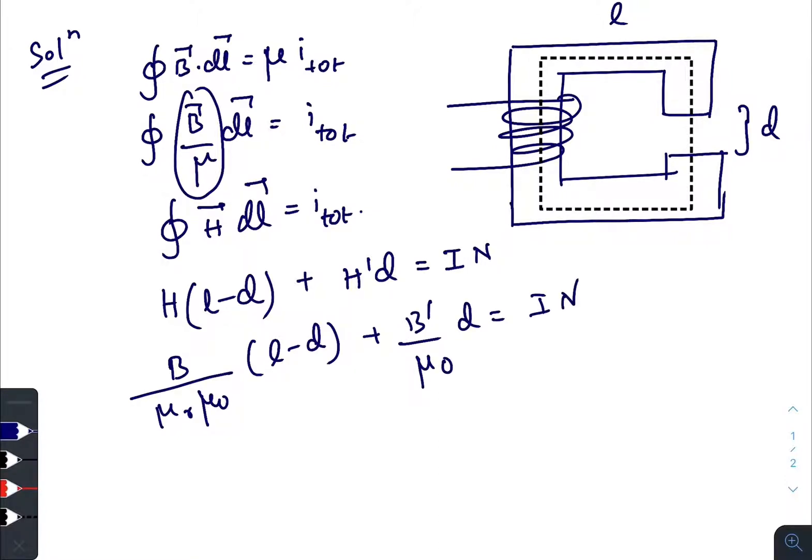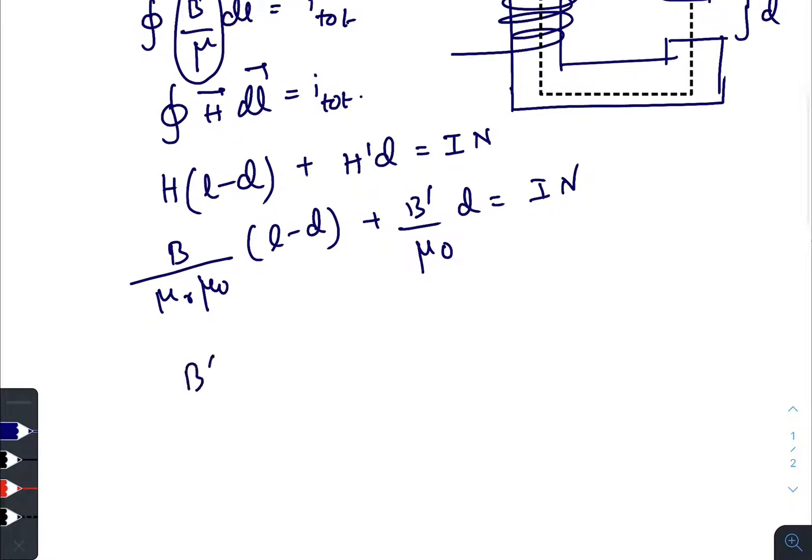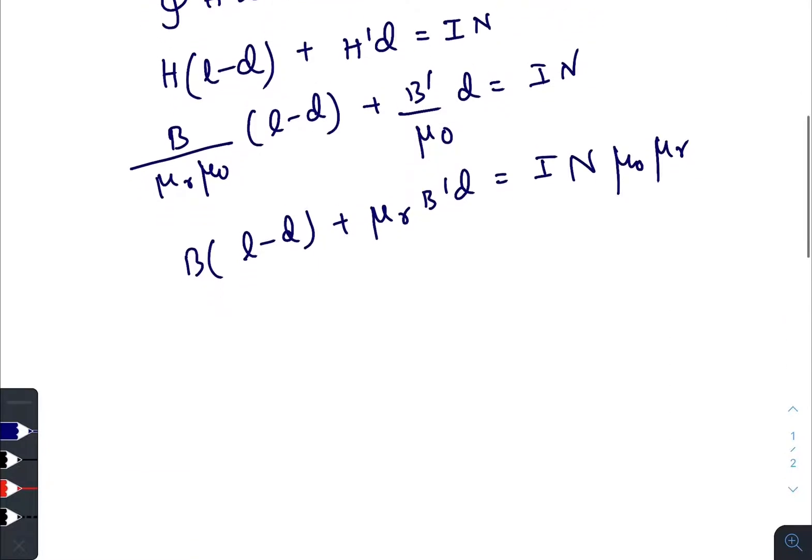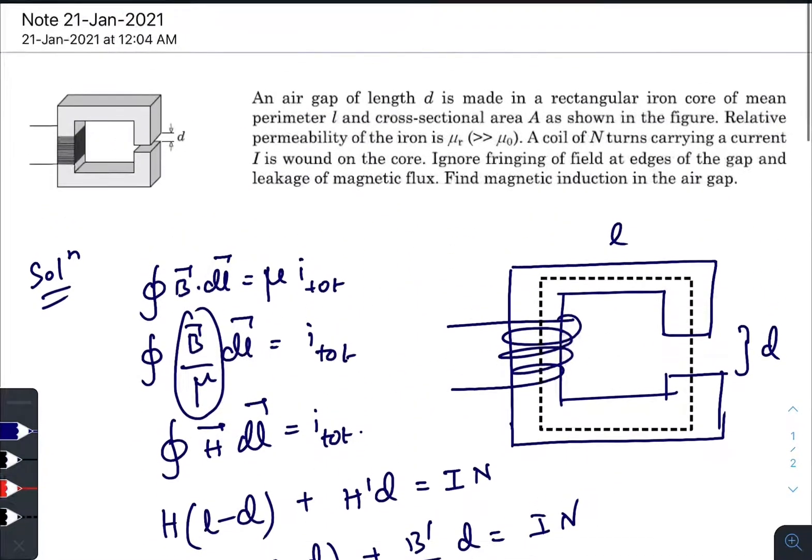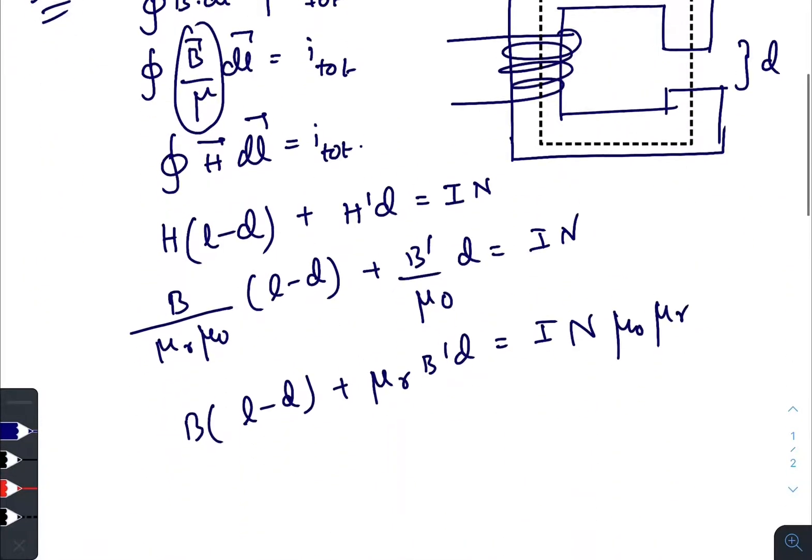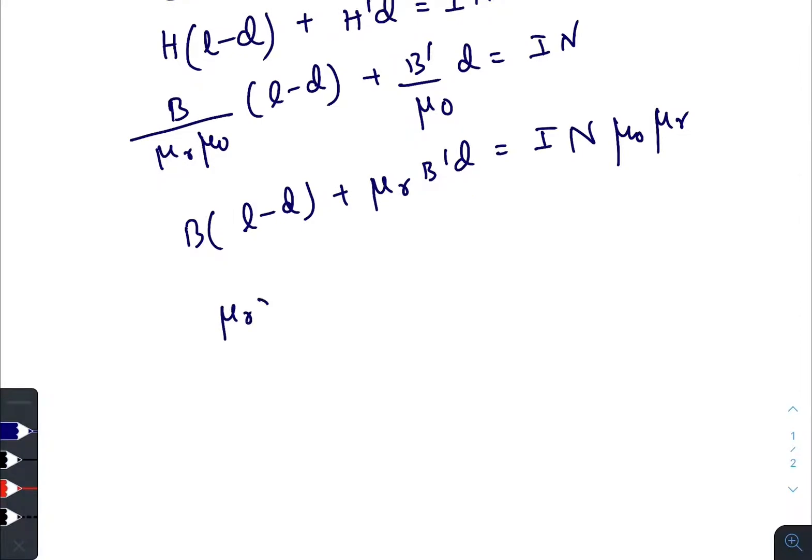So B times (l minus d) plus mu r times B prime into d equals to I N mu naught into mu r. And in the question it is given that mu r is very much greater than mu naught, so basically the B prime will be nearly equals to B.